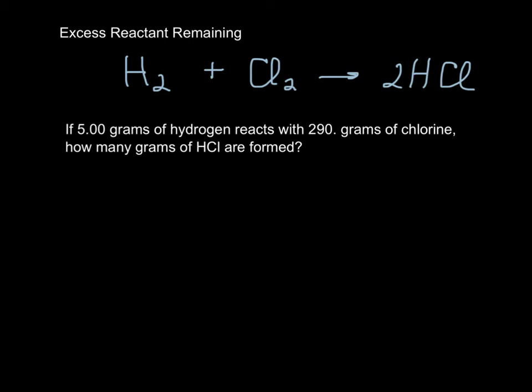You will sometimes be asked to determine the amount of excess reactant remaining after the reaction is done. So we're just going to go through a couple of examples here for you. If 5 grams of hydrogen reacts with 290 grams of chlorine, how many grams of HCl are formed?